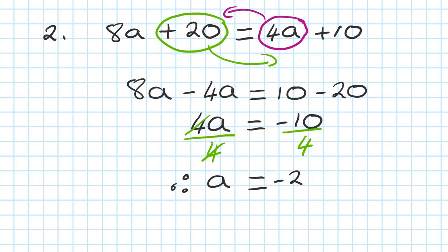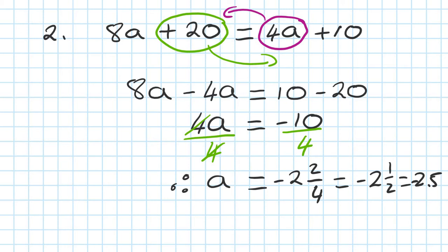So therefore, a is equal to minus 10 divided by 4, which is negative 2 and a half. Or you can write minus 2.5. Just remember — minus 10 divided by 4 is minus 2.5, as simple as that. It's all about the process; you just need to get the right process.